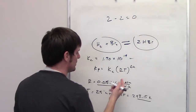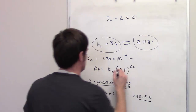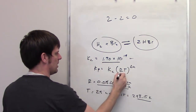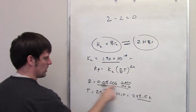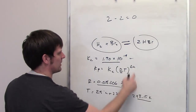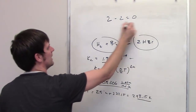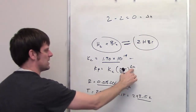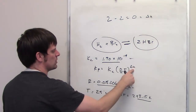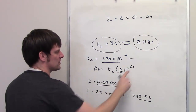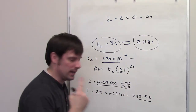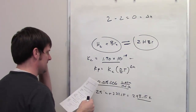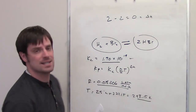Now we substitute the numbers. We have Kc, R, temperature, and delta N. Since delta N is 0, using that as an exponent reduces the entire RT term to 1. So Kp ends up equaling Kc — 1.9 times 10 to the 19th.